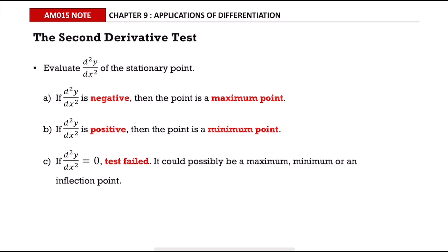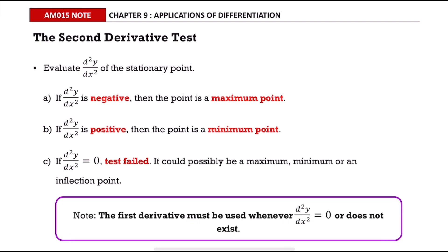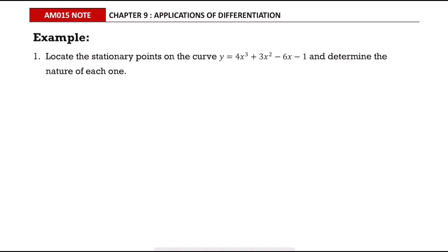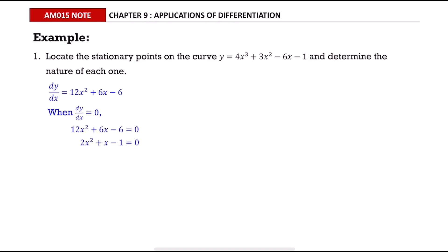If the second derivative equals zero, the test fails — it could possibly be a maximum, minimum, or an inflection point. The first derivative test must be used whenever the second derivative equals zero or does not exist. In this example, we want to find the stationary points and determine their nature using the second derivative test. To find the stationary point, we find dy/dx first by differentiating the given equation, then equate it to zero, simplify, factorize, and solve for x.